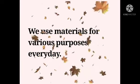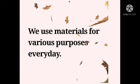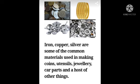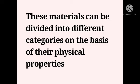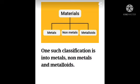We use materials for various purposes every day. Iron, copper, and silver are some of the common materials used in making coins, utensils, jewellery, car parts, and a host of other things. These materials can be divided into different categories on the basis of their physical properties. They are metals, non-metals, and metalloids.